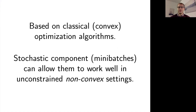The stochastic component arising from random choices of mini-batches can allow these optimizers to work surprisingly well in unconstrained, non-convex settings. From the theoretician's perspective, this is really interesting. There's a significant theory-practice disconnect here, and a lot of the ways that people use stochastic optimizers in practice is based around heuristics.